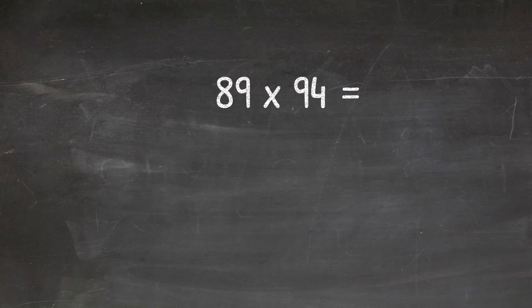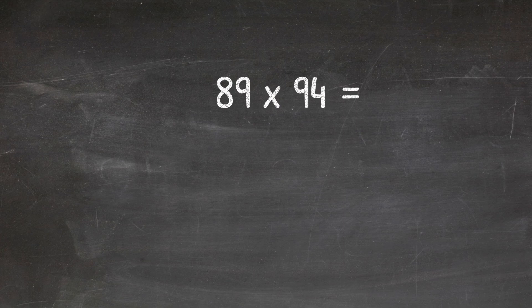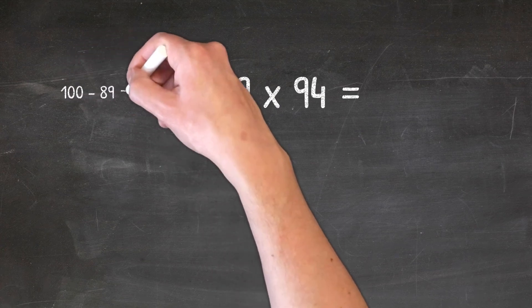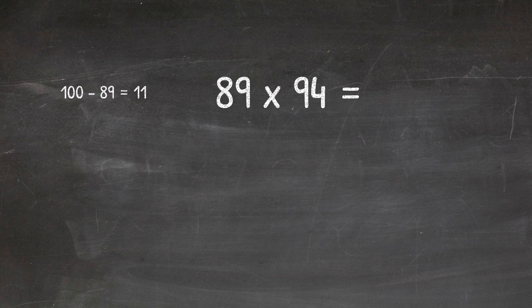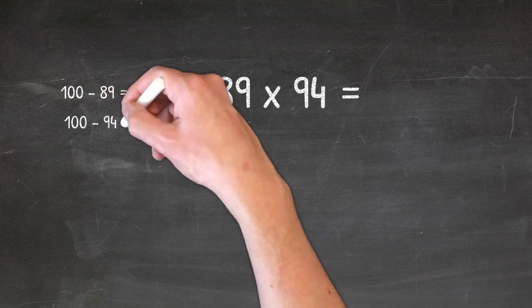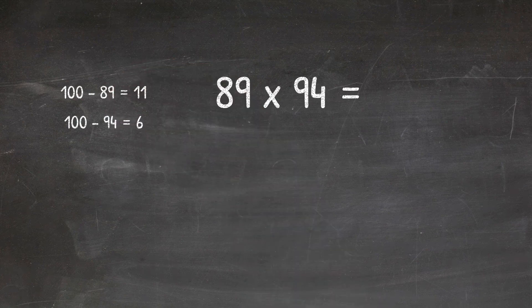So let's start with 89 and 94 this time. And as before, we're going to multiply these two together. We're going to take our 89 and minus it from 100 and that gives us the value of 11. Then we're going to do the same thing with 94. We're going to minus it from 100 and that gives us the value of 6.